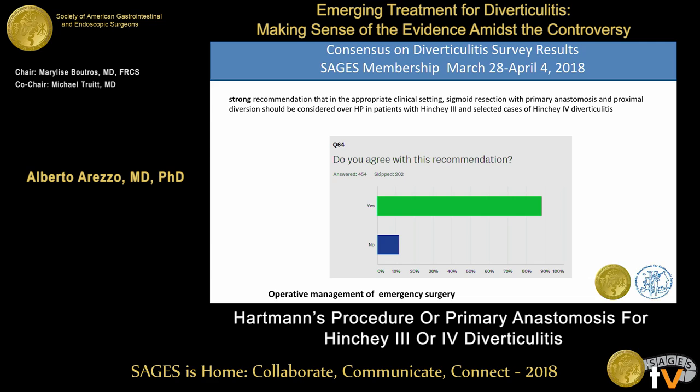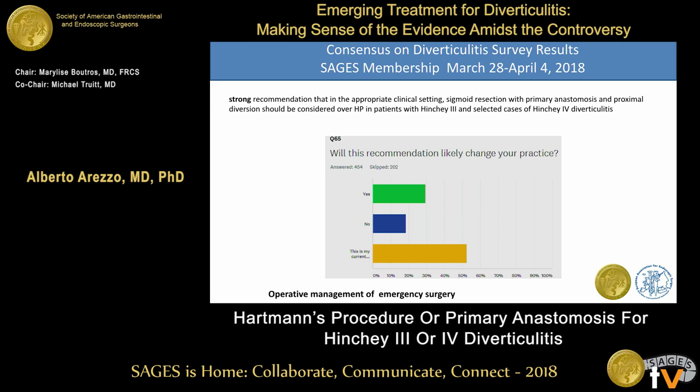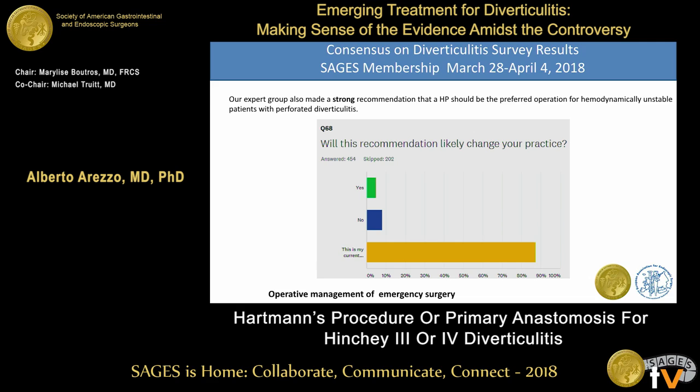This was largely agreed upon by attendees and those who replied to the survey, which is still online — I invite everybody to contribute at least until the London meeting of the AIS. The same respondents stated that either they already do this or they are going to change practice in favor of it. Our expert group also made a strong recommendation that Hartmann procedure should be the preferred operation for hemodynamically unstable patients with perforated diverticulitis.